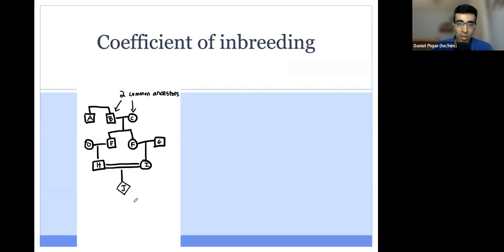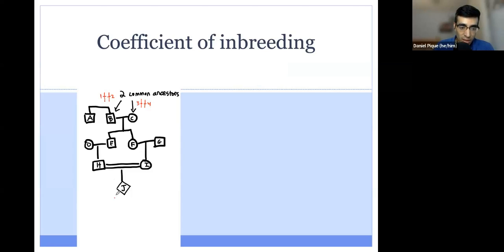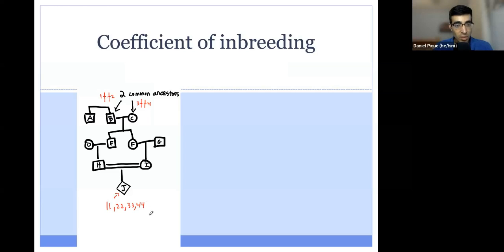The coefficient of inbreeding is the chance that for any given locus, individual J is homozygous for alleles inherited from a common ancestor. Let's say individual B has alleles 1 and 2 at a locus, and individual C has alleles 3 and 4 at the same locus. We ask: what are the chances that J is homozygous — either 1/1, 2/2, 3/3, or 4/4 — having inherited both copies from a common ancestor, which in this case is one of their grandparents?